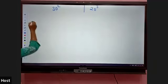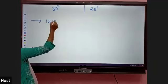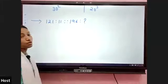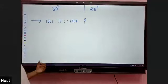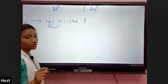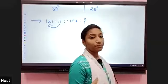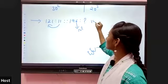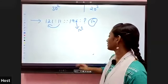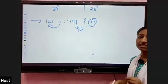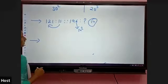Let us solve some problems. For example: 121 is to 11, then 196 is to how much? Here 121 is 11 squared, and 196 is 14 squared, so the answer is 14. This is one example regarding squares.